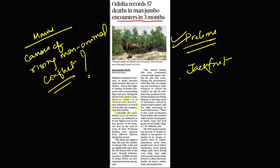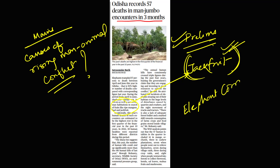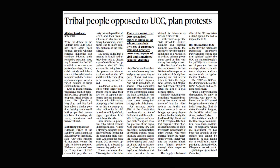From the prelims perspective, jackfruit was asked in this year's prelims — what kind of tree it is and in which climatic region it is generally grown. You can also prepare elephant corridors, which are very important, and prepare elephant species from the prelims perspective.